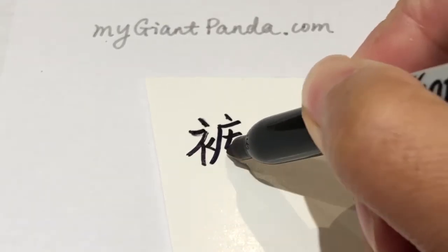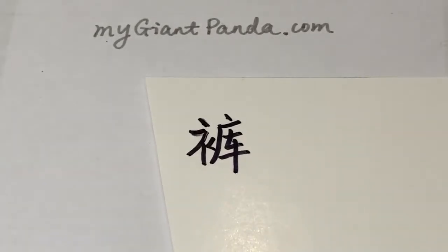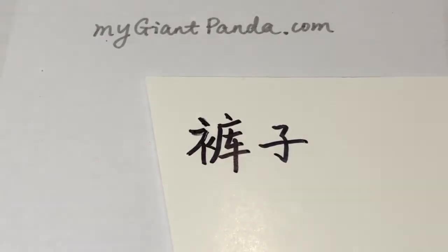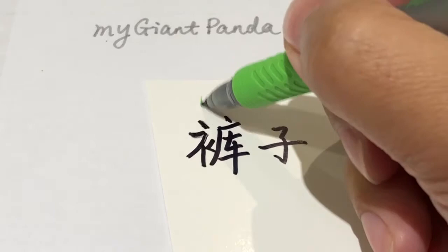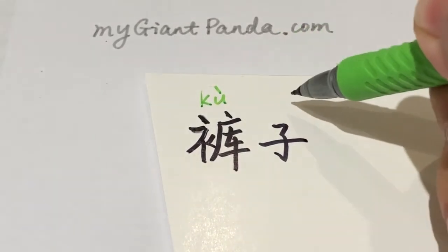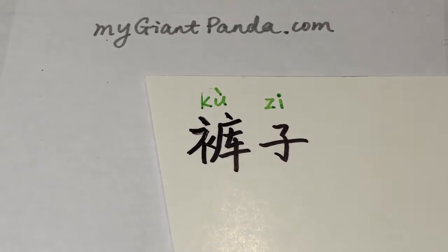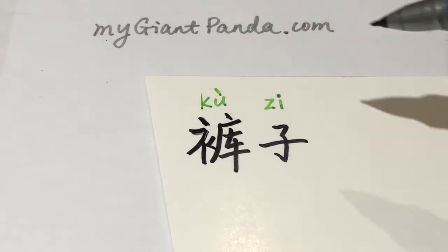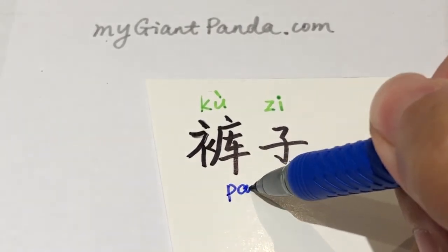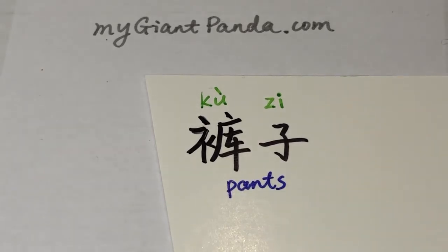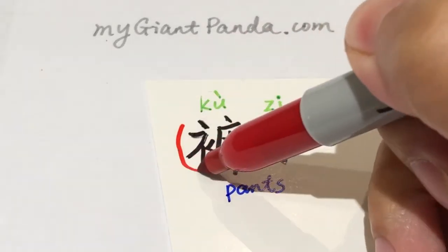衣字旁在左边，右边是一个广字头，下面一个车。褲。褲子的拼音标上去：裤，kù。子是没有音调的，是一个轻音。所定义的英语是pants。